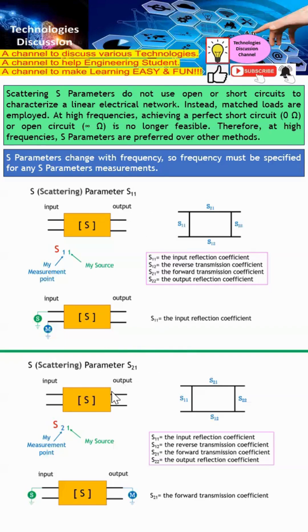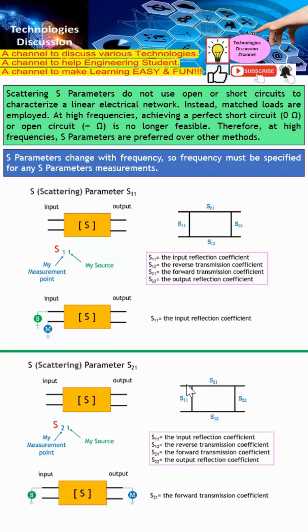S21 follows the same concept: the second digit is where the source is, and the first digit is where the measurement is. Here, the source is at port 1 and the measurement is at port 2, so the signal propagates forward. Therefore, S21 is known as the forward transmission coefficient.